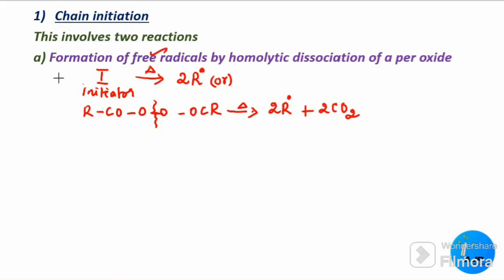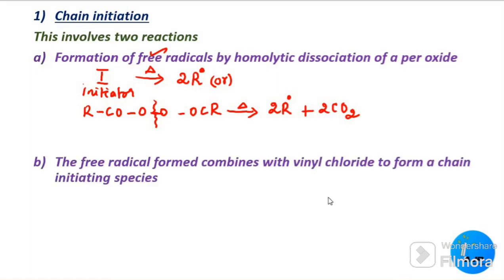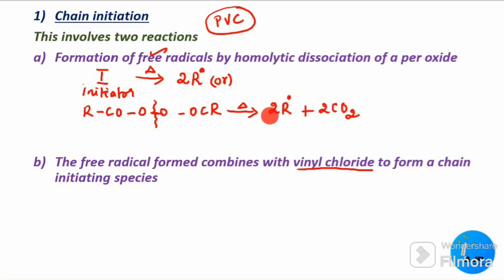In the second reaction of chain initiation, the free radical that is formed combines with vinyl chloride. We are preparing polyvinyl chloride — PVC. The monomer in polyvinyl chloride is vinyl chloride. So the free radical combines with a vinyl chloride to form a chain initiating species.